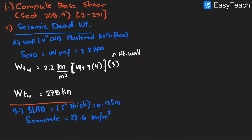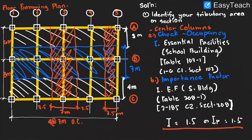Now we need the weight of the slab. Notice that in our tributary area, the floor section we're using is 7 by 14 meters — that is our floor load area.